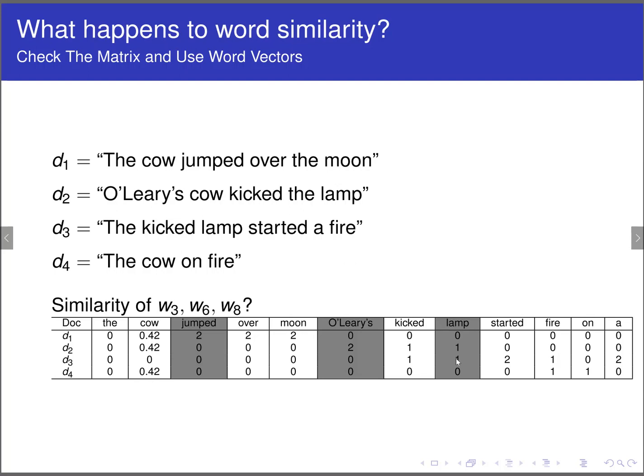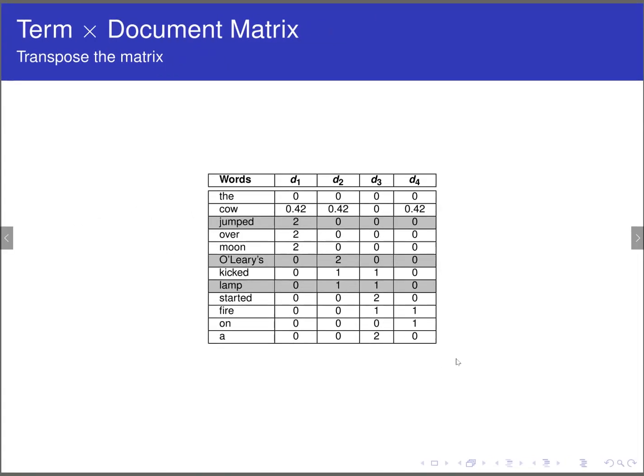So we can basically transpose this matrix. Transposing means make the columns be rows and the rows be columns. And you end up with something like this, where the document name is up in the columns and the rows are the words. And now you have jumped like this, O'Leary's like this, words in the rows. And you can do the same cosine similarity that you use for determining which documents were similar to determine which words are similar.